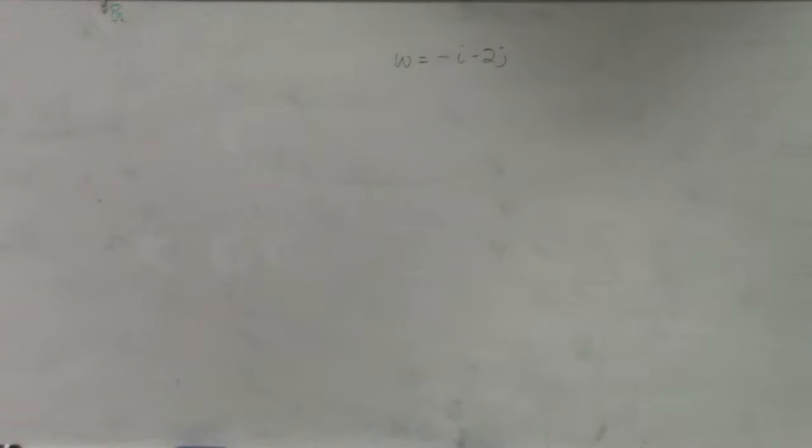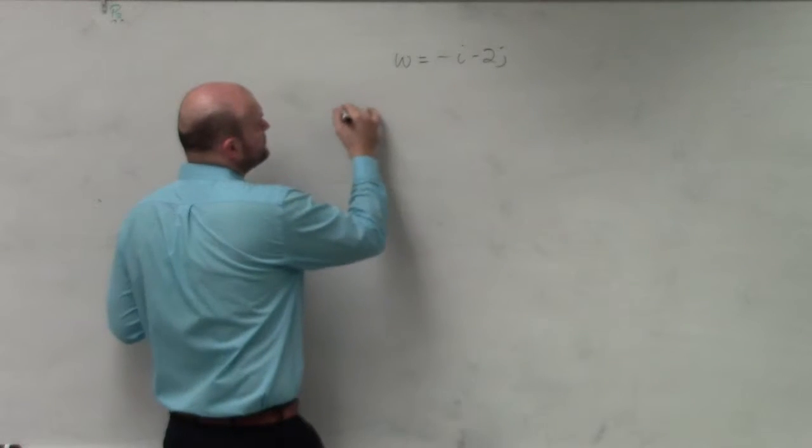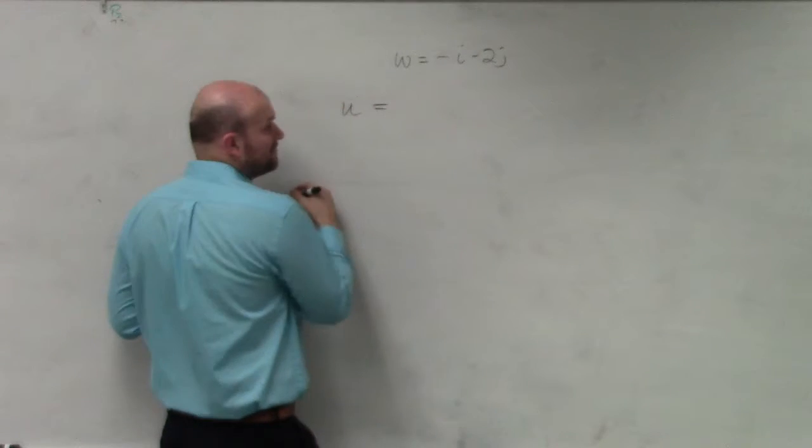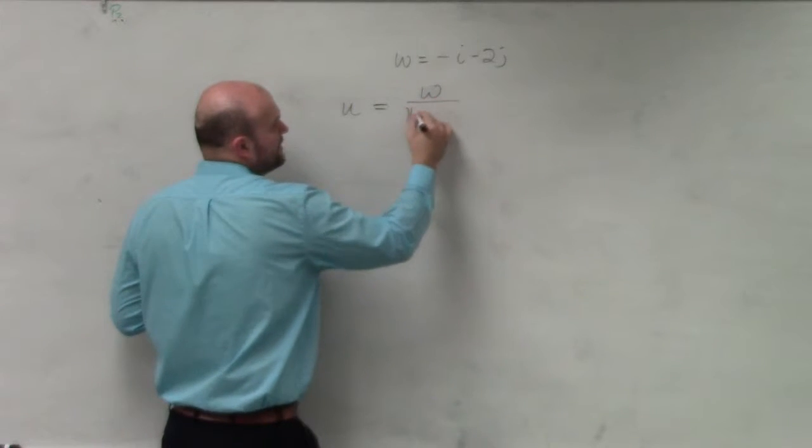What we're asking to do is w equals negative 1 minus 2i, and they're asking us to find the unit vector u. So just remember, the formula for the unit vector is basically, for any vector, it's going to be w over its magnitude.